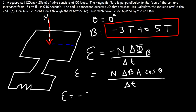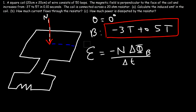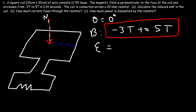Plugging in: N is 50, the change in B is the final value of five minus the initial value of negative three. The area is 0.20 m times 0.20 m (since 20 centimeters equals 0.2 meters), multiplied by cosine of zero degrees, divided by the change in time of 0.1 seconds. Five minus negative three equals eight, so we get negative 50 times 8 times 0.2 times 0.2 times 1 divided by 0.1, giving an induced EMF of negative 160 volts.